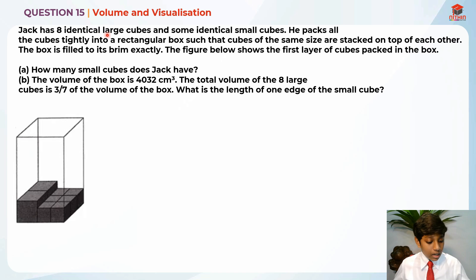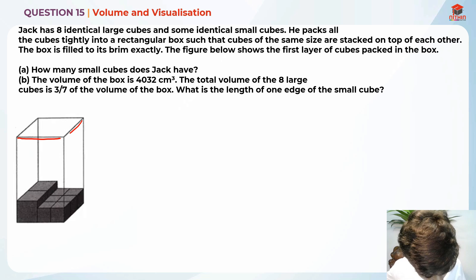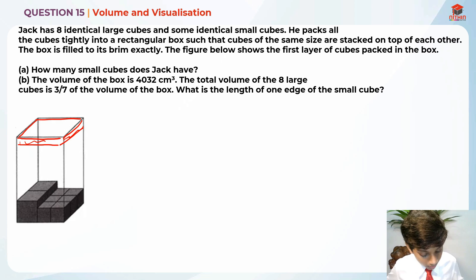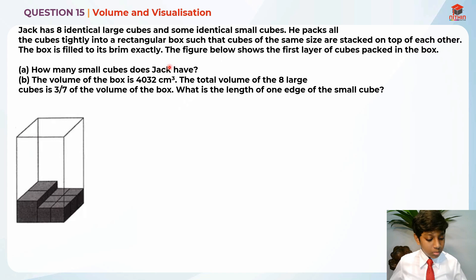Jack had eight identical large cubes and some identical small cubes. Here are the two large cubes and the six small cubes — this is just the first layer. He packs all the cubes tightly into a rectangular box such that the cubes of the same size are stacked on top of each other. The box is filled to its brim exactly, meaning there is no leftover space. The figure shows the first layer of the cubes packed into the box, with large cubes on one side and small cubes on the other side. For part A, they are asking us: how many small cubes does Jack have?